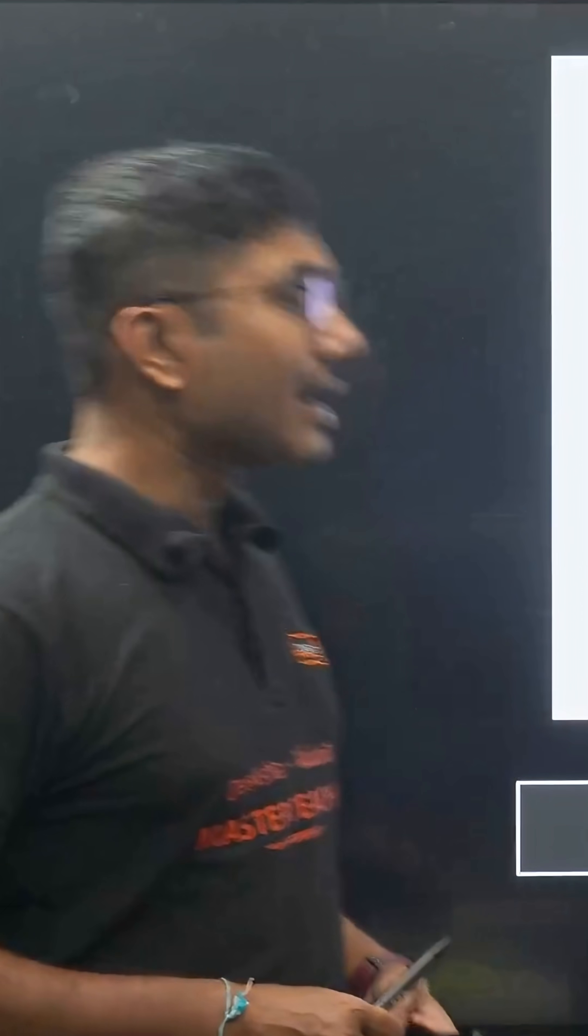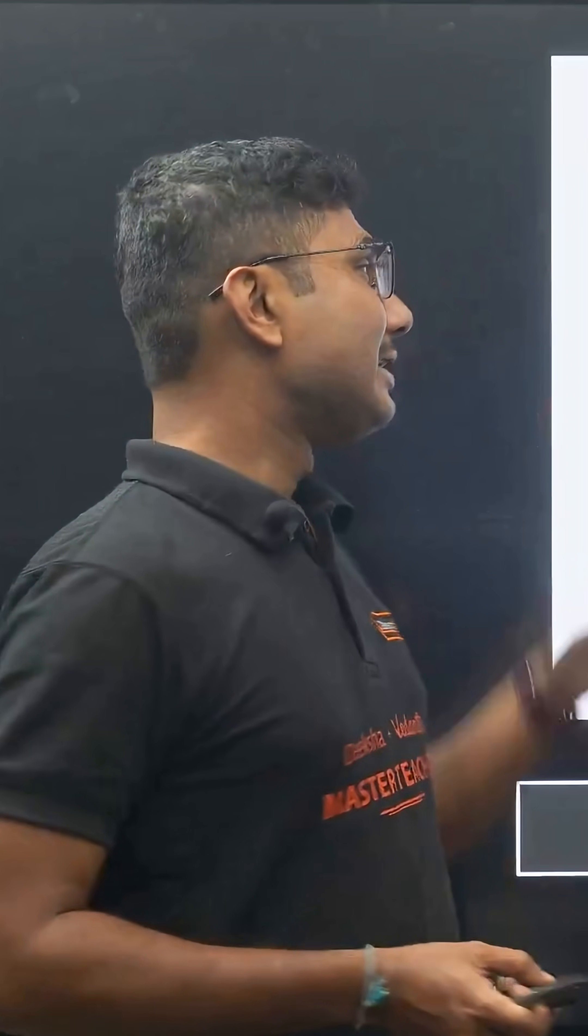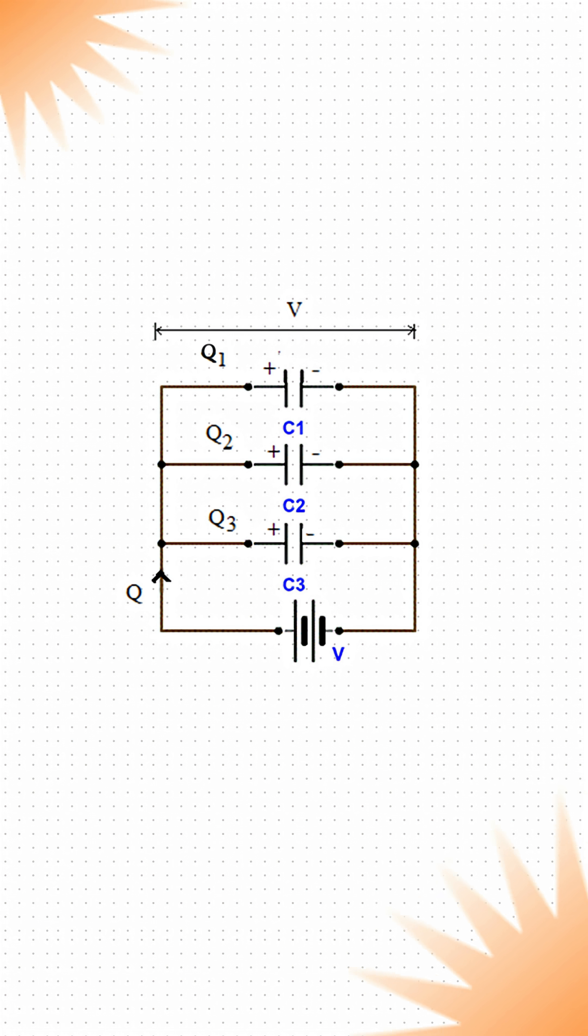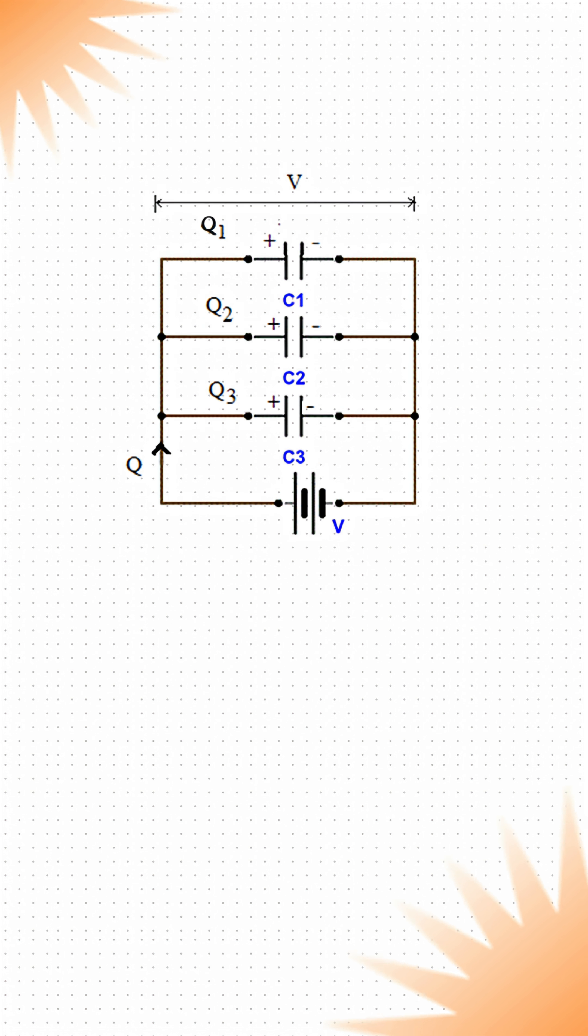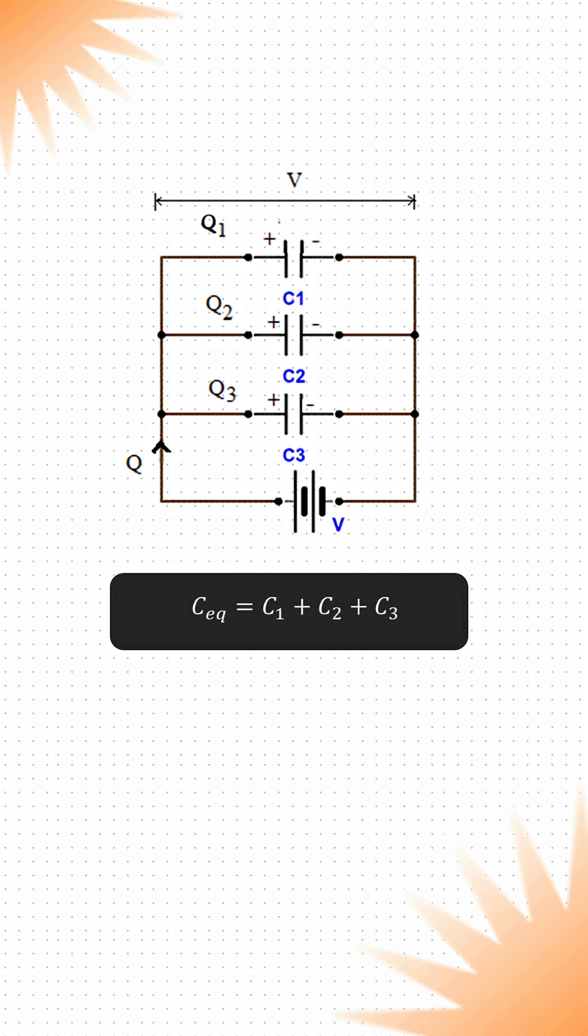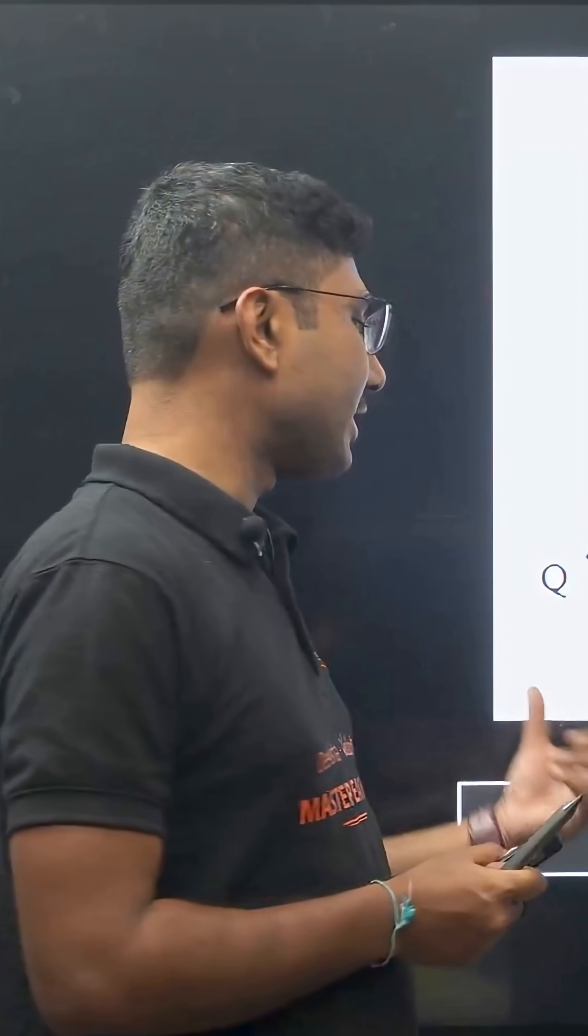Now in case of parallel combination of capacitors, the charges in individual capacitors vary, but the total potential in the system remains constant. In case of parallel combination, the capacitors just get added numerically.